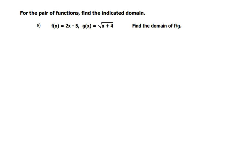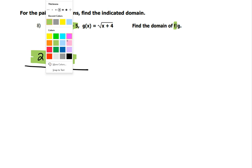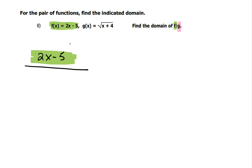Okay, on this one we're looking for the indicated domain and it says find the domain of f divided by g. So if f is our numerator and that's this function, it would go on top. So on top we'll have 2x minus 5, and then the denominator is the g of x which is this function, so down on the bottom you have the square root of x plus 4.